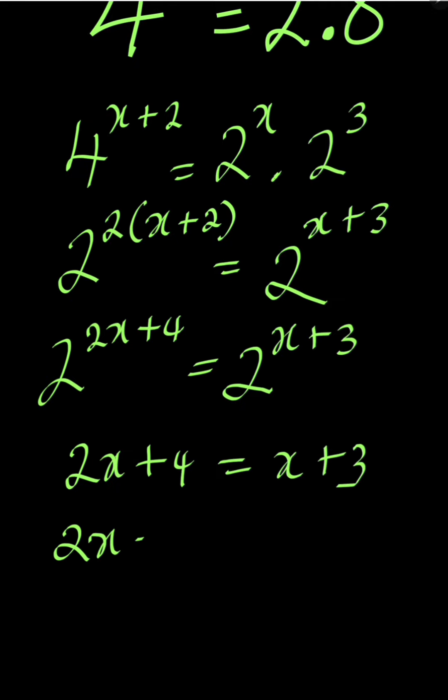Solving this we have 2x minus x is equal to 3 take away 4. And 2x minus x is the same as x. 3 minus 4 is minus 1. And this is the solution to this problem.